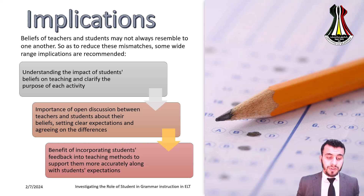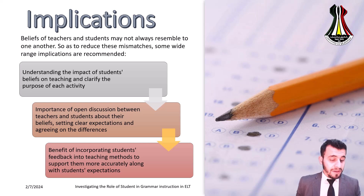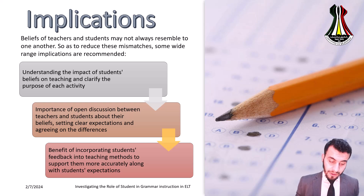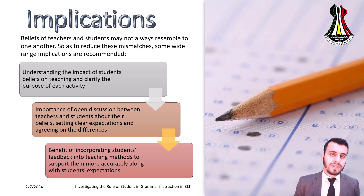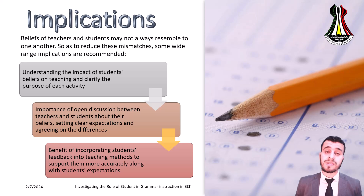For implications: the beliefs of teachers and students may not always resemble one another, so to reduce these mismatches, wide-ranging implications are recommended. These include: understanding the impact of students' beliefs on teaching and clarifying the purpose of each activity; encouraging open discussion between teachers and students about their beliefs; setting clear expectations and agreeing on differences; and incorporating students' feedback into teaching methods to support them more accurately along with their expectations.